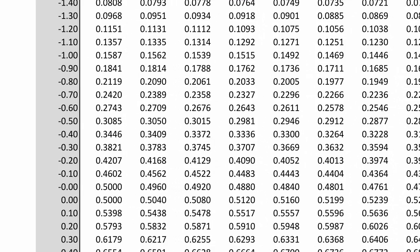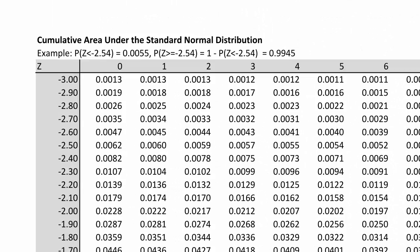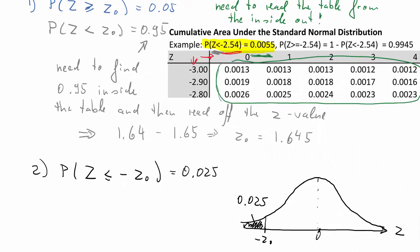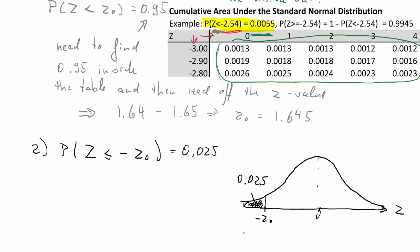So we'll find 2.5% in the table. 2.5% is here exactly. So that's negative 1.96. So if we have instead of negative z0, if we have negative 1.96, then we know that statement is true.